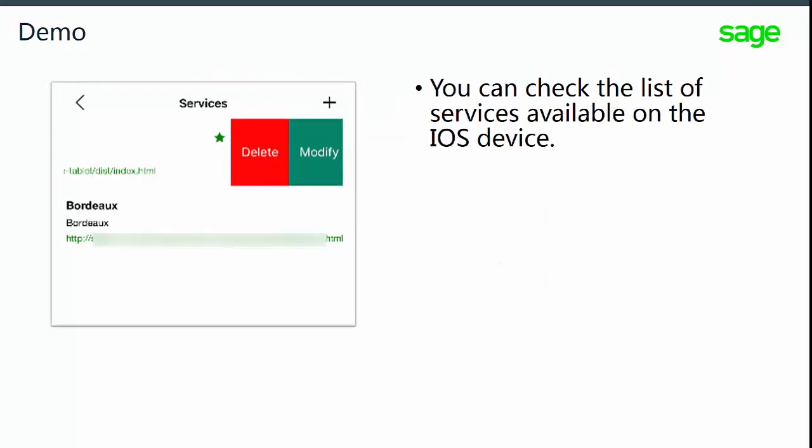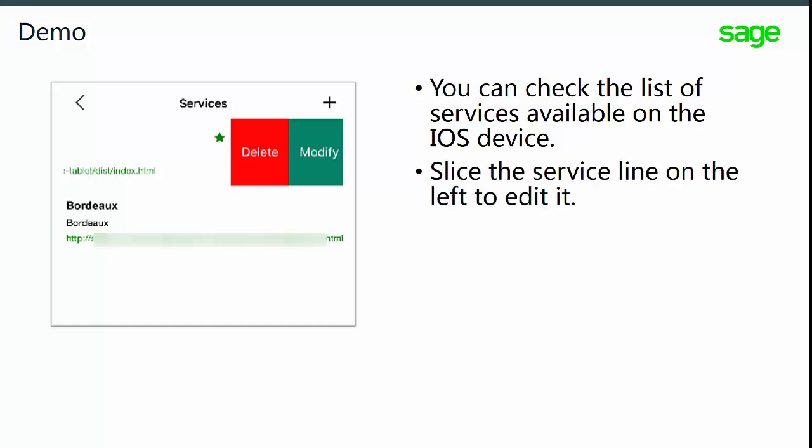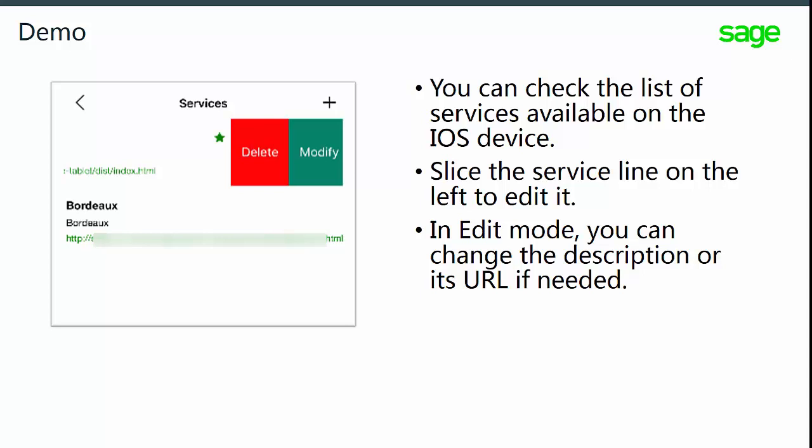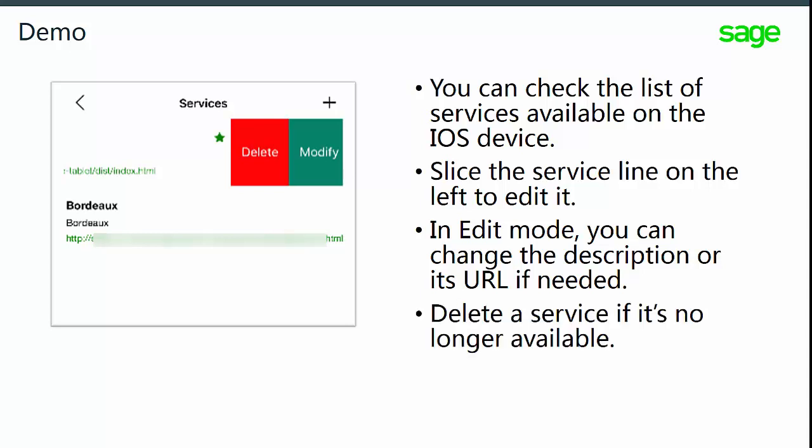You can check the list of services available on the iOS device. Swipe the service line on the left to edit it. In edit mode, you can change the description or its URL if needed, and you can delete a service if it's no longer available. Also on this page, you can connect to the defined Sage X3 access. Just select the link and enter your credentials. Your credentials need to be saved if you want to allow refreshed data for your live tiles.